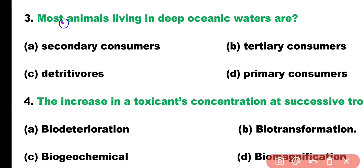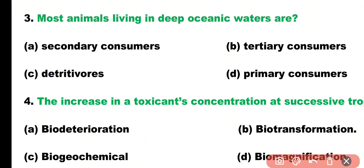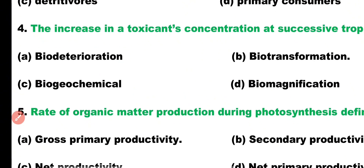Question number three. Most animals living in deep oceanic waters are: secondary consumers, tertiary consumers, detritivores, or primary consumers? Correct answer is option C. Most animals living in deep oceanic waters are detritivores.